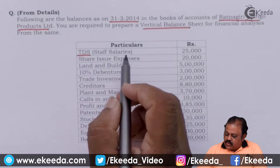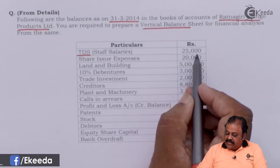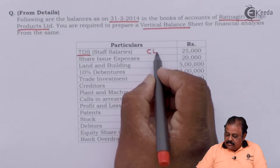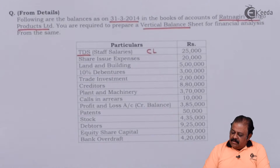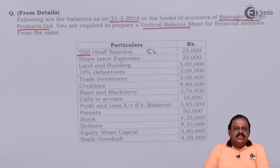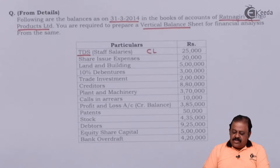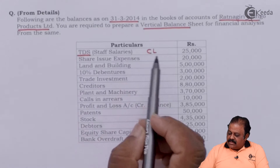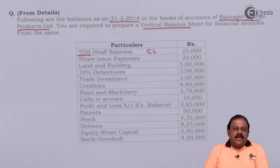TDS — tax deducted at source — on staff salaries of 25,000 will be part of current liability. Staff salary is an expense for the company and income for employees. As per income tax rules, the company is required to deduct income tax from salaries which are actually payable by employees, and this is indirectly paid by the company to the income tax department. Employees get tax credit for the amounts deducted from their salaries. So TDS on staff salaries is a current liability — an amount payable by the company to the government.